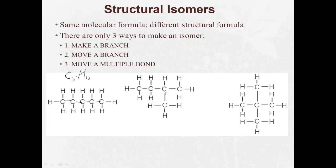Alright, what about here? 1, 2, 3, 4, 5 carbons, C5. Counting: 1, 2, 3, 4, 5, 6, 7, 8, 9, 10, 11, 12 hydrogens.